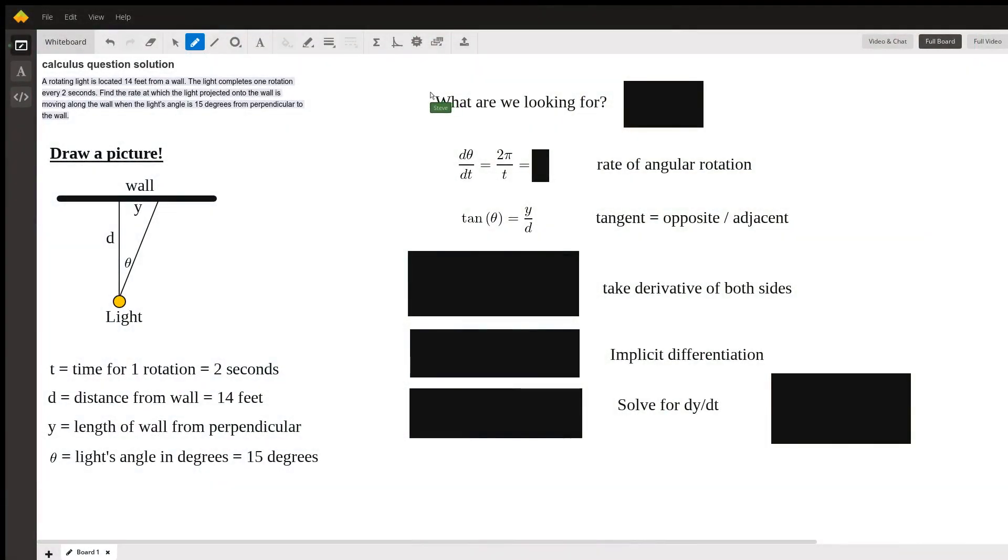Here with another fun calculus problem. This is a classic, I've seen this many times. The problem says a rotating light is located 14 feet from a wall. The light completes one revolution every two seconds. Find the rate at which the light projected onto the wall is moving along the wall. The key here is draw a picture, draw a picture and go step by step.